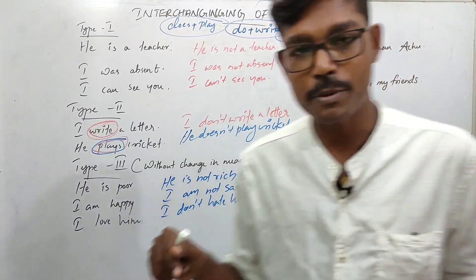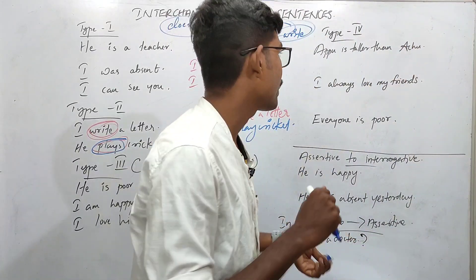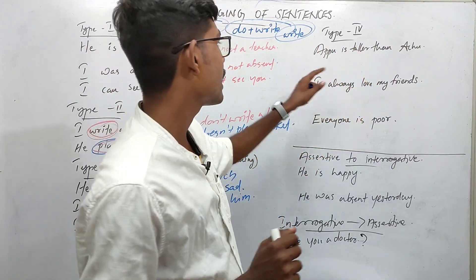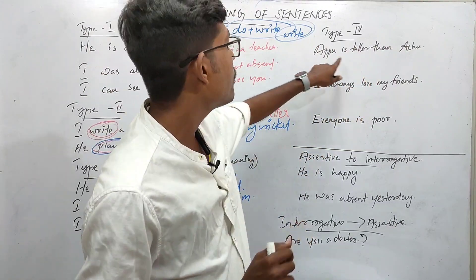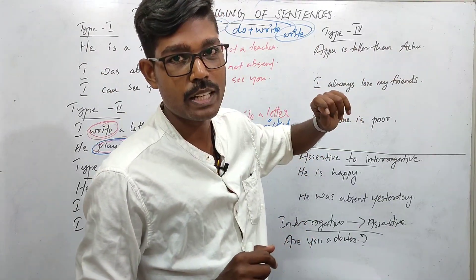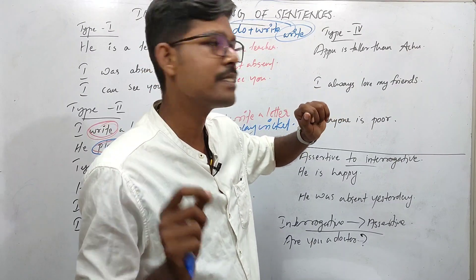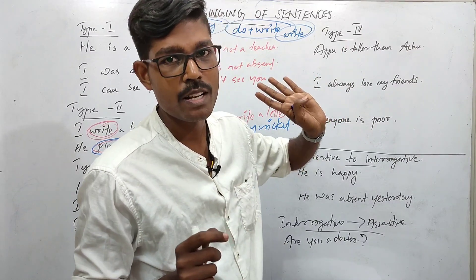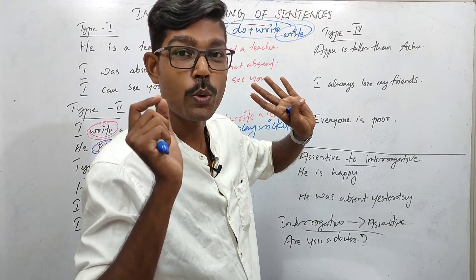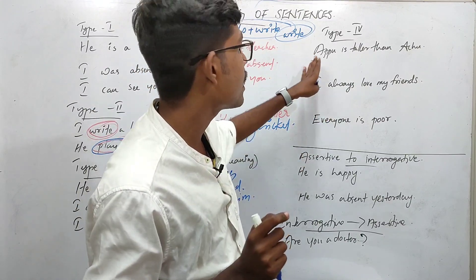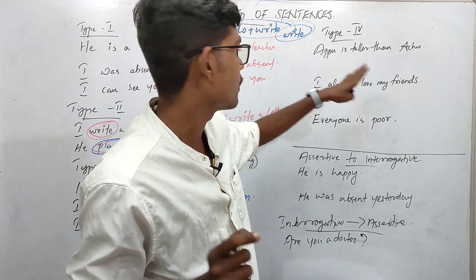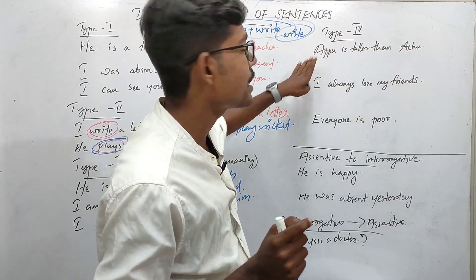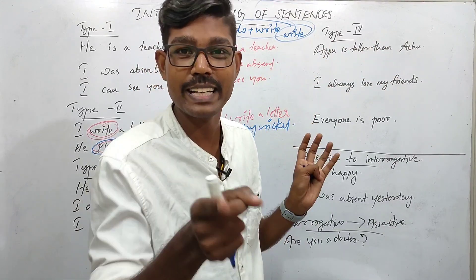Then here we have Type 4 — comparing degrees. 'Appu is taller than Achyuu.' Okay, here we go. 'Appu is taller than Achyuu' — Achyuu is not as tall as Appu.